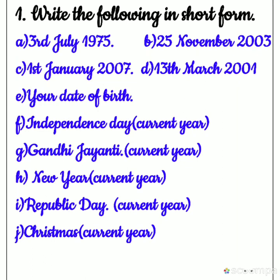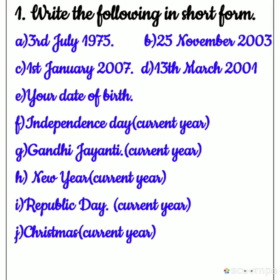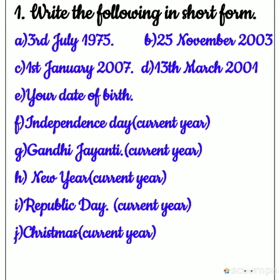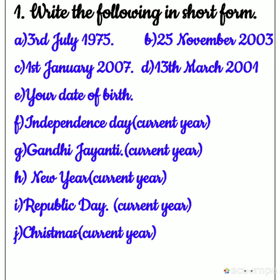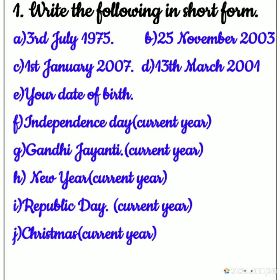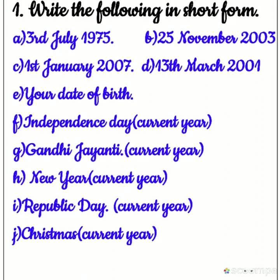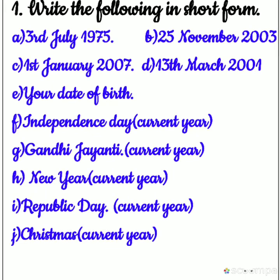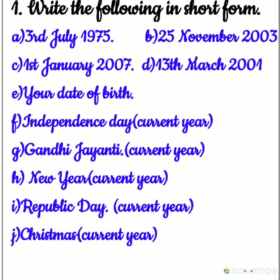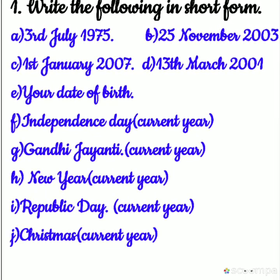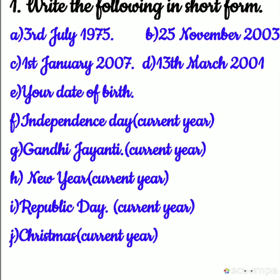Toh aap isko kaise likhoge numbers mein? 3rd ko 3, then dot. July kaun se number ka mahina hai? 7. Toh 7, dot. Aur year ko short mein kaise likhte hain? Last ki 2 digits likhte hain — 75. Toh likhenge: 3.7.75.